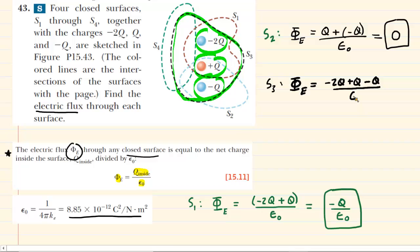divided by epsilon. Q minus q is 0. Those cancel out. So this leaves us with a total electric flux expressed as negative 2q divided by epsilon. So that would be the correct answer for surface 3.